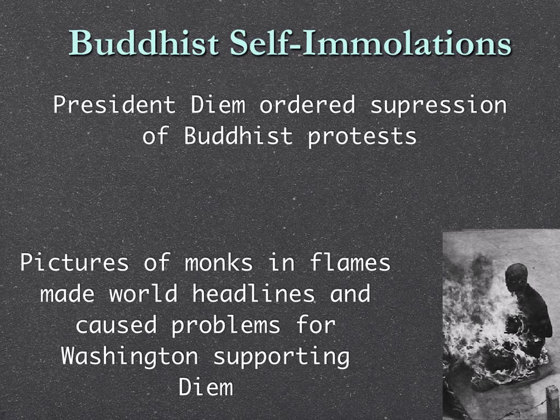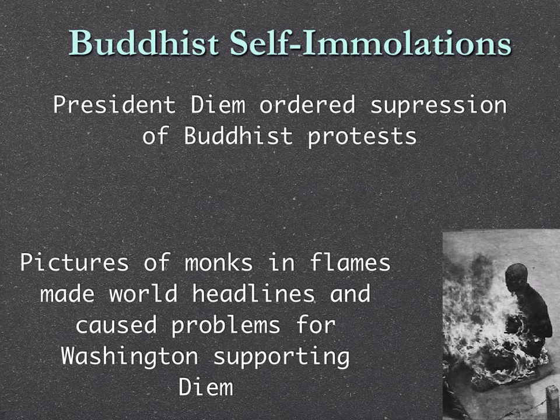By early 1963, Diem had many problems and Kennedy was getting fed up with him. The generals asked the US for approval, and the United States approved the overthrow of the government and the exile of Diem and his brother. But in November, the South Vietnamese military overthrew Diem, captured him and his brother, and murdered both of them. Just a couple of weeks later, Kennedy was assassinated. Things changed.